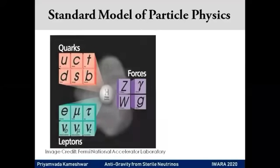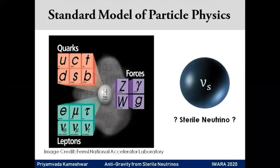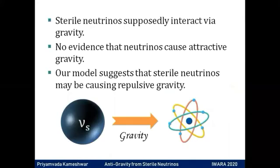We start with the standard model of particle physics which gives out three flavors of neutrinos. Some theories beyond the standard model predict the existence of a sterile neutrino which emerged to explain the small masses of neutrinos. Sterile neutrinos are said to interact via gravity.